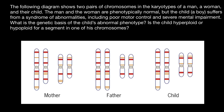Hello, and welcome to Nikolai's Genetics Lessons. Today's problem is: the following diagram shows two pairs of chromosomes in the karyotype of a man, a woman, and the child. The man and the woman are phenotypically normal, but the child, a boy, suffers from a syndrome of abnormalities, including poor motor control and severe mental impairment.